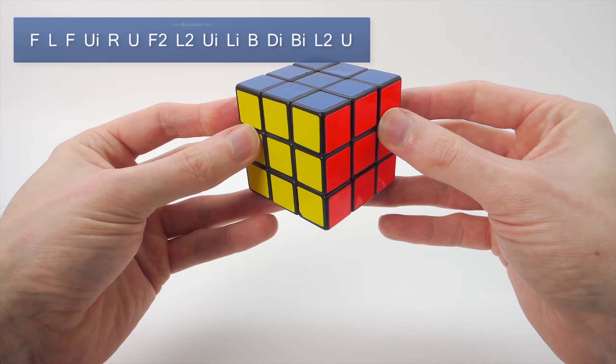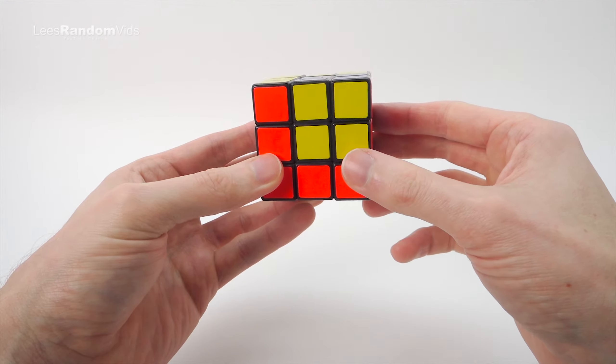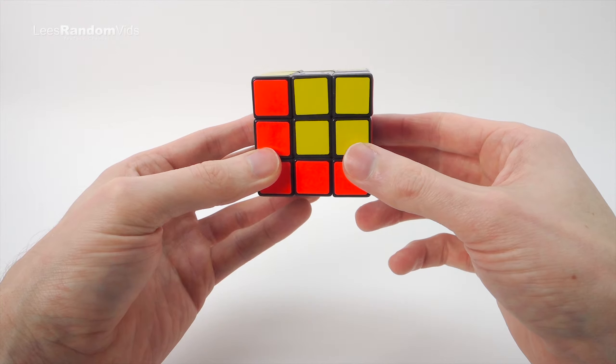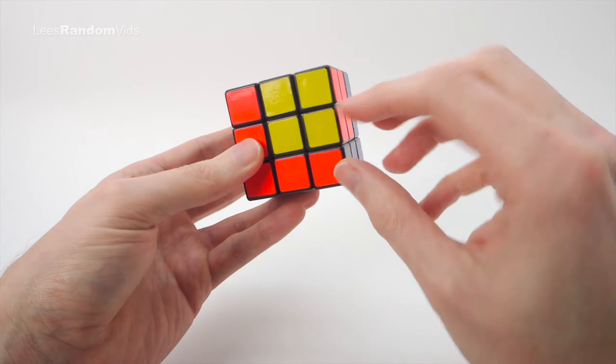Okay, so let's do that algorithm. We go F, L, F, U', R, U, F2, L2, U', L', B, D', B', L2, U. And that gives us the cube in a cube pattern.